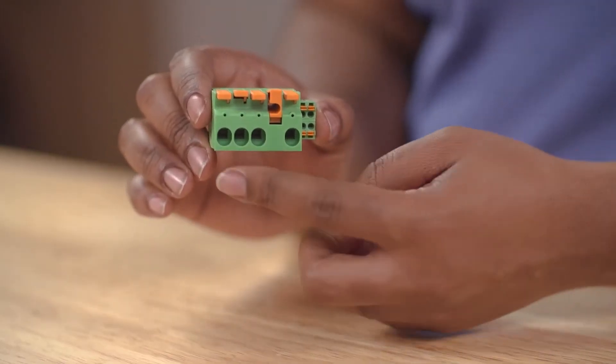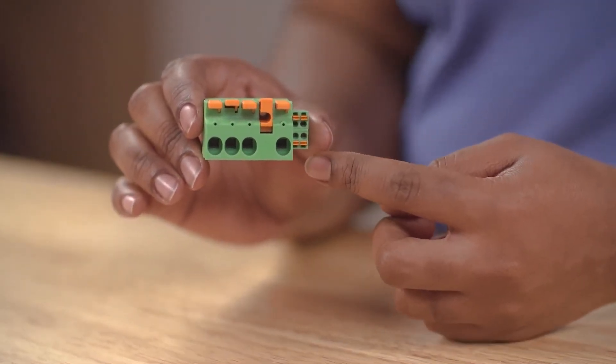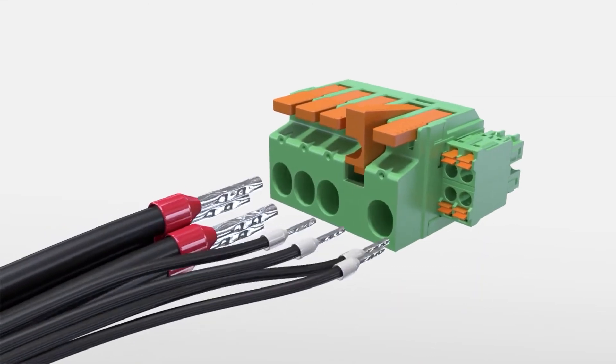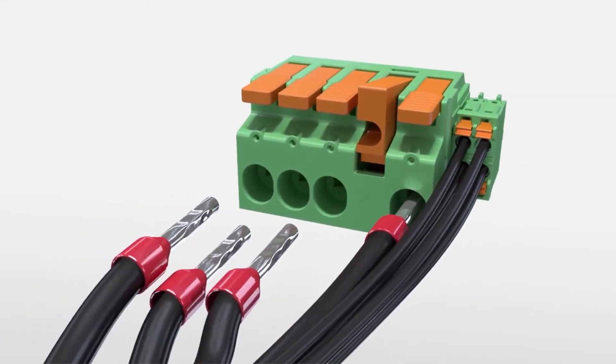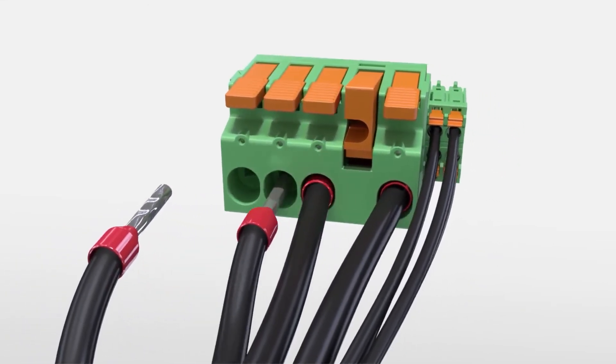The real benefit of the LPCH-6 is the addition of signal connections to the power connector. This allows for not only power to be supplied to the device, but signal monitoring can also be achieved through the same connector.